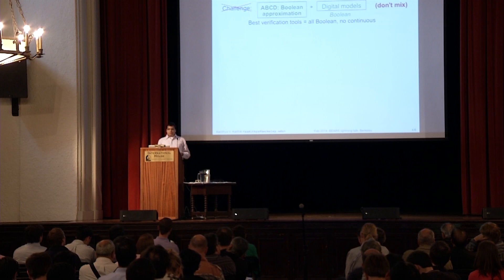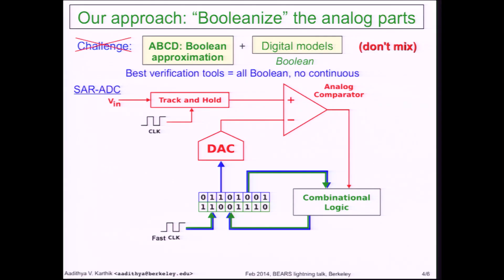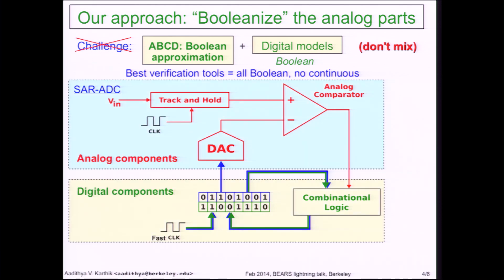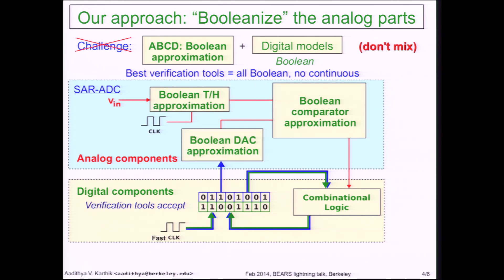What ABCD does — ABCD is the software we are developing — is that it takes every analog component in the chip and replaces it with a very accurate Boolean model. For example, this is a successive approximation analog-to-digital converter, or a SAR ADC. As you can see, it's got both analog and digital components. The digital components are already accepted by most verification tools, and with the help of ABCD we can replace the analog components as well using purely Boolean approximations, in a way that is both accurate and scalable. Once we do that, we end up with a system-level description that is all Boolean, and we can then use any of a large number of existing techniques to verify this kind of model.